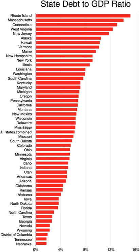The United States comprises 50 states: 13 that were already part of the United States at the time the present Constitution took effect in 1789, plus 37 that have been admitted since by Congress as authorized under Article 4, Section 3 of the Constitution.